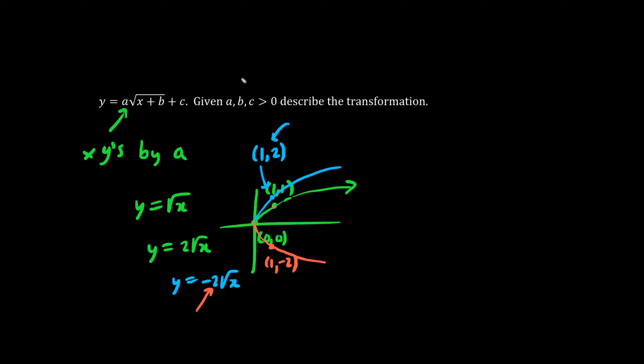But given that a is positive, it has to be twice as tall. Now this square root graph begins at 0 comma 0. However, we shift B units to the left and C units up.